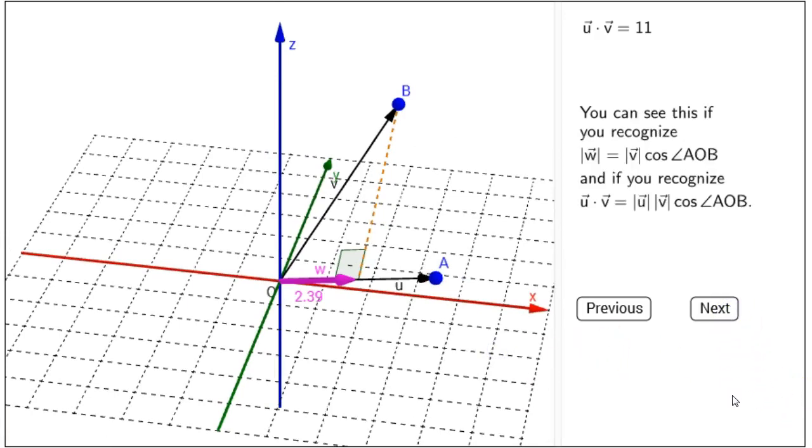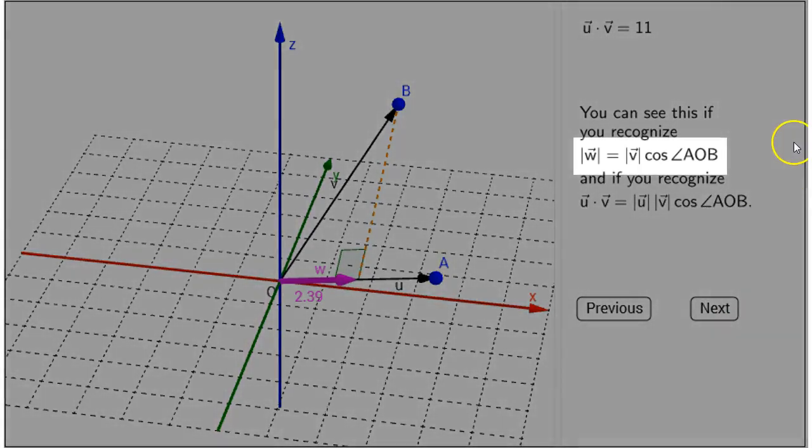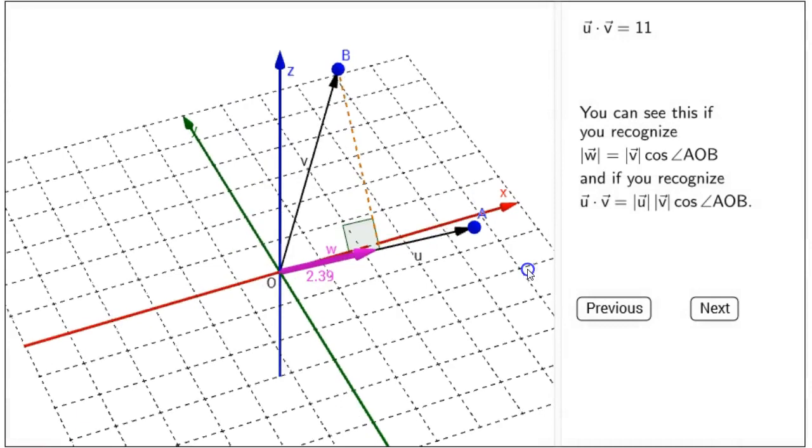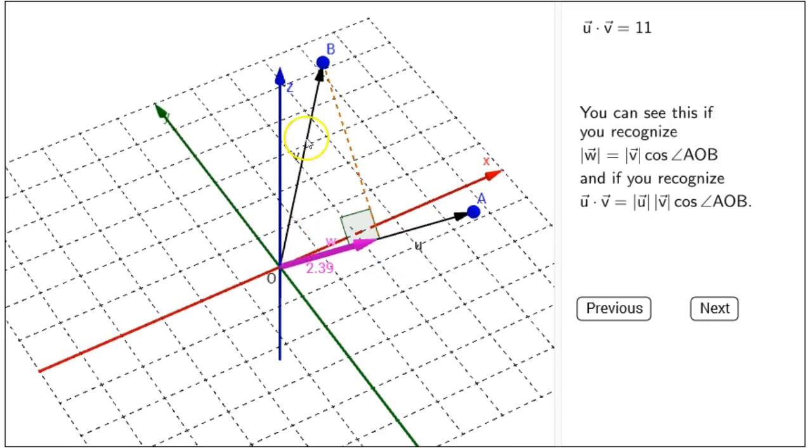You can see this if you recognize the length of W equals the length of V times the cosine of angle AOB. I'll stop there for a second. And why is that true? So, that's true because we have a right triangle here where W is the length of the adjacent side and V is the hypotenuse.